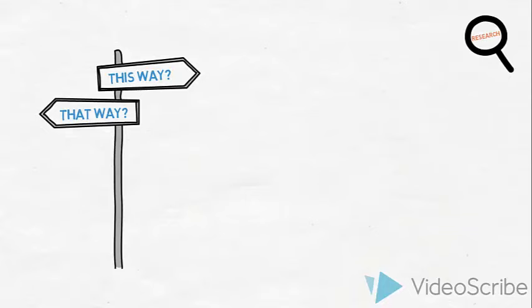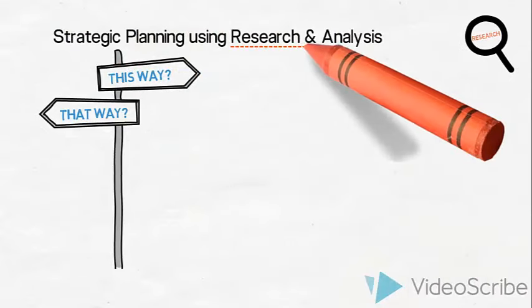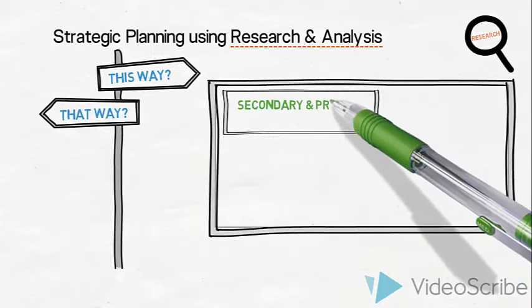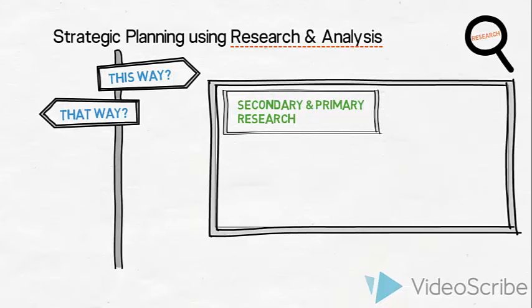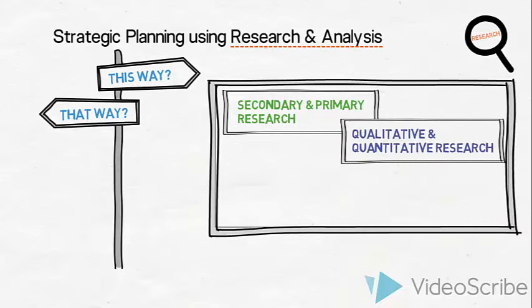When organizations enter into strategic planning, they conduct different types of research and analysis. They might conduct both secondary and primary research. They would consider using qualitative and or quantitative research and different survey types.